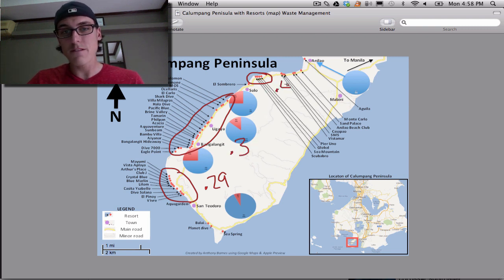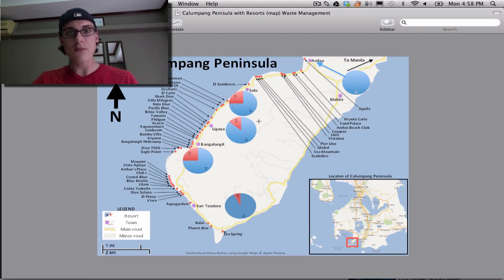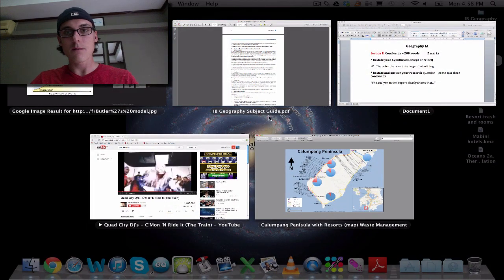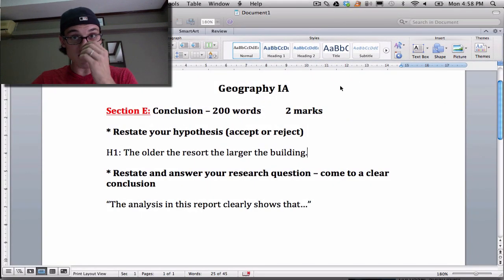But this one was like 0.49, and probably because there's only four resorts, I might have included a fifth. But either way, I found out that there was a slight positive correlation, but not enough to accept my hypothesis.